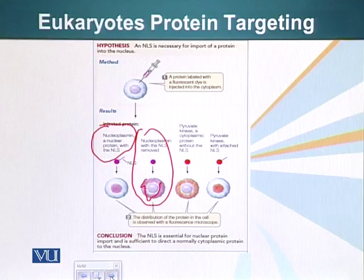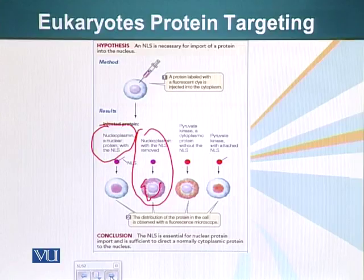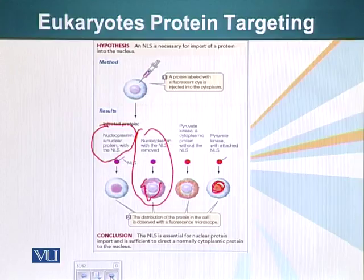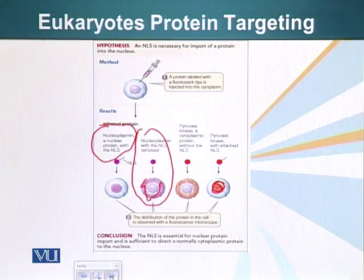Another protein, pyruvate kinase, stays in the cytoplasm and never goes into the nucleus. They attached the NLS to this protein, and when they injected it into the cell, the entire protein accumulated in the nucleus. This experiment clearly demonstrated that NLS is essential for nuclear protein import and is sufficient to direct a normally cytoplasmic protein to the nucleus.